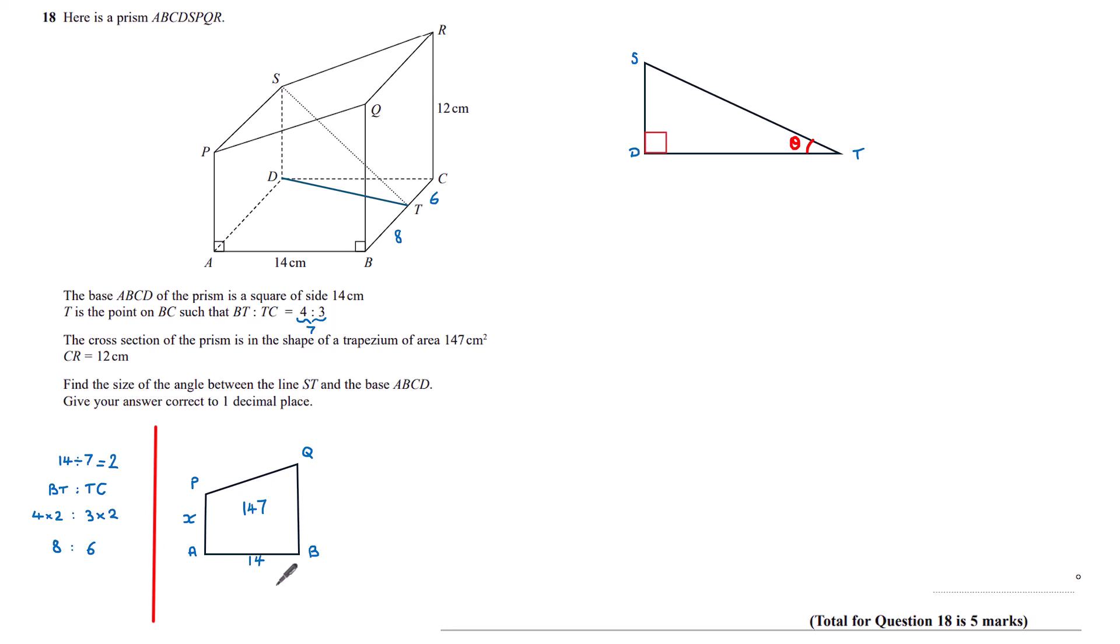I know the base to be 14, and I know BQ to be the same as CR, and so that's 12. The area of a trapezium is half of the top and bottom, so in this case X plus 12, multiplied by the perpendicular height, which here is 14. Dividing both sides, half times 14 is 7, so dividing both sides by 7,